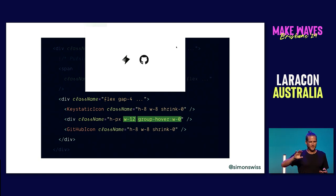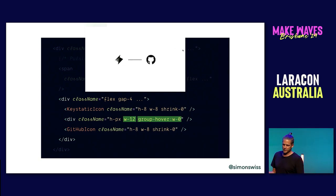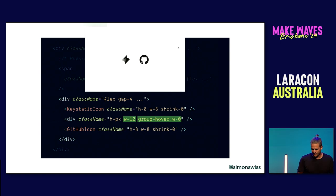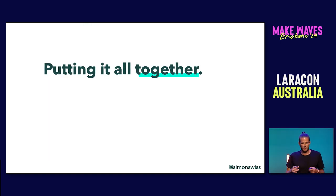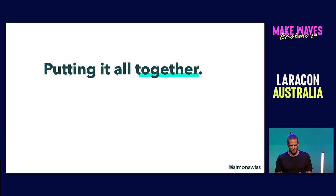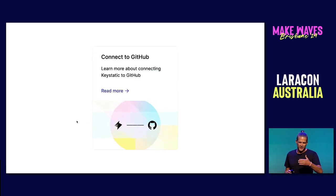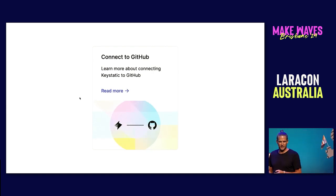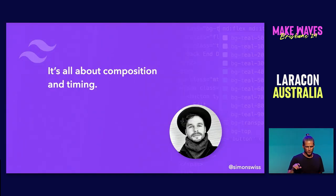Animating width is not always a good idea for performance reasons — layout shift and all that — but here it's inside the card element with nothing else moving around, so it's completely fine. When you put it all together, what used to feel like dark magic now has three clear layers working together. A lot more of you would feel comfortable giving it a shot. Remember what Chris said: it's all about composition and timing.